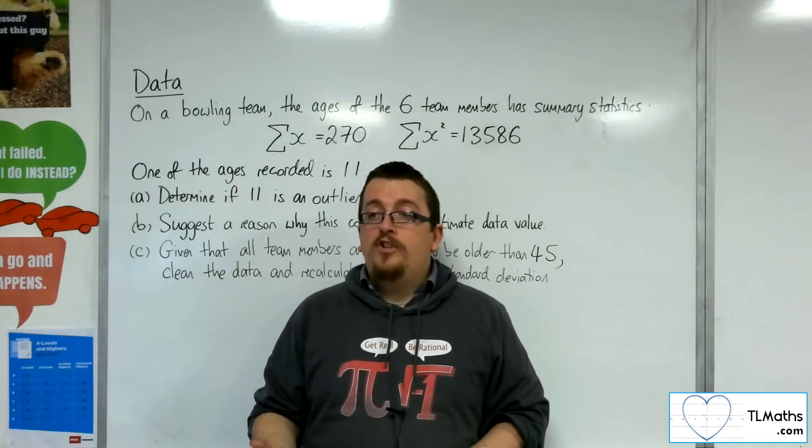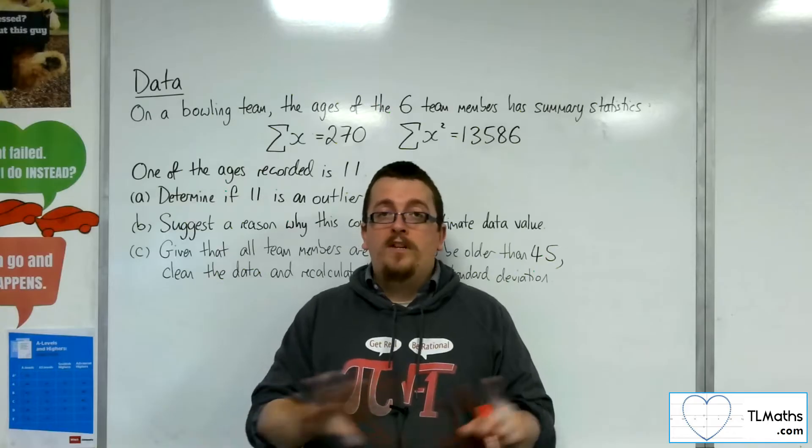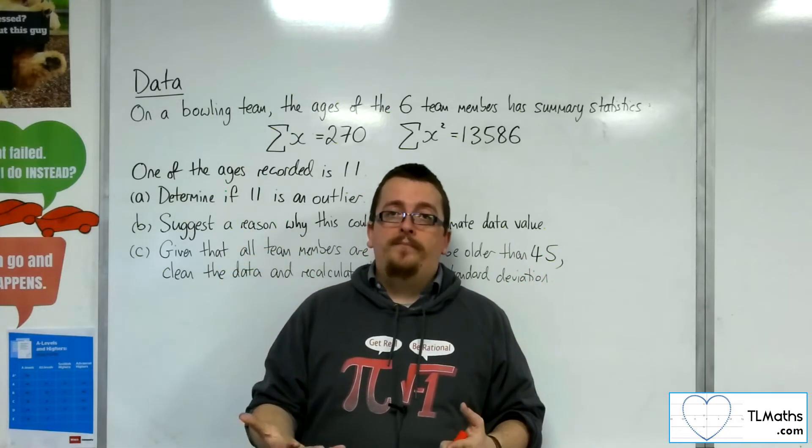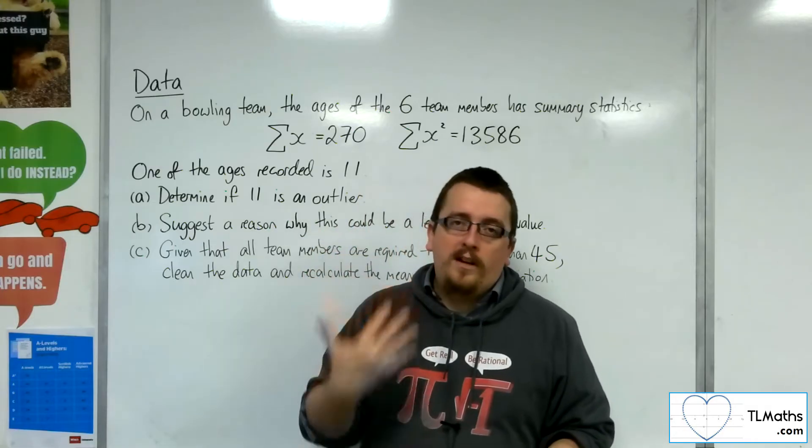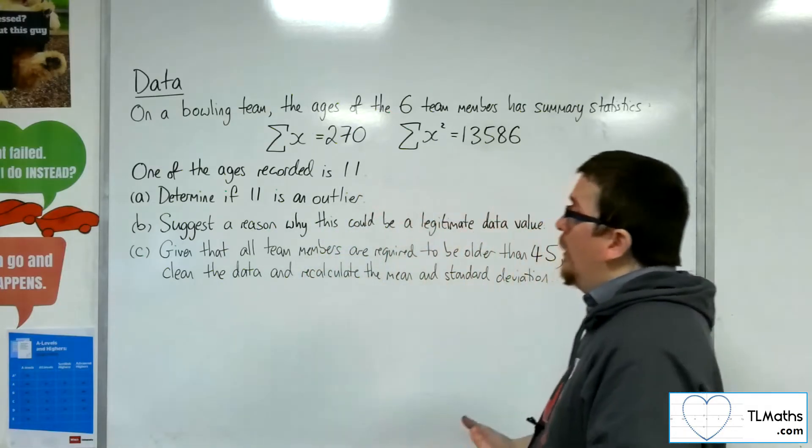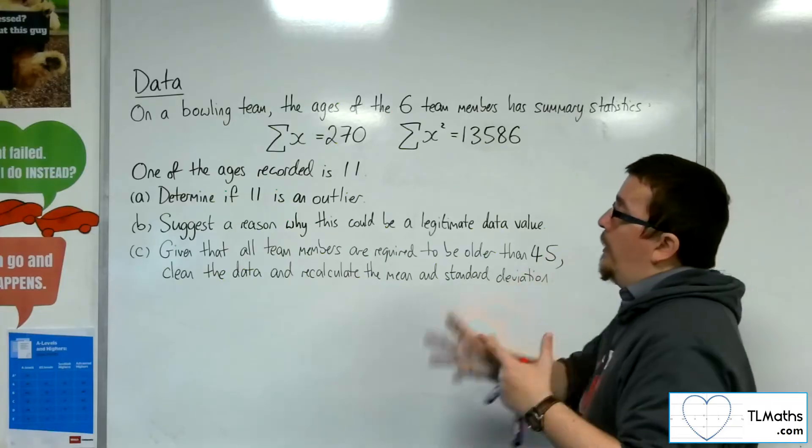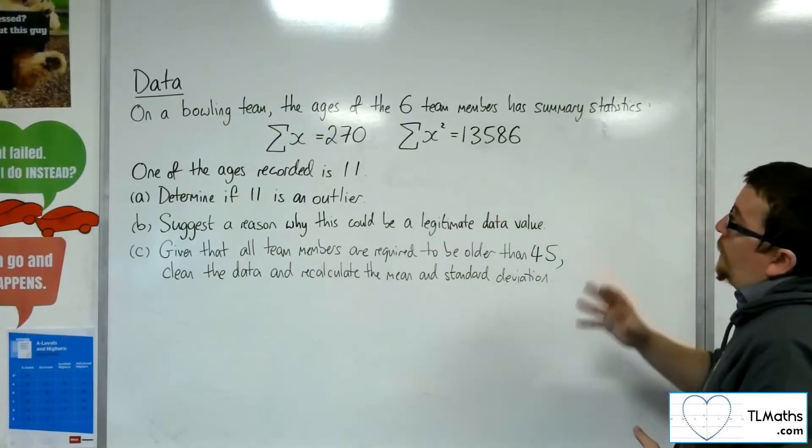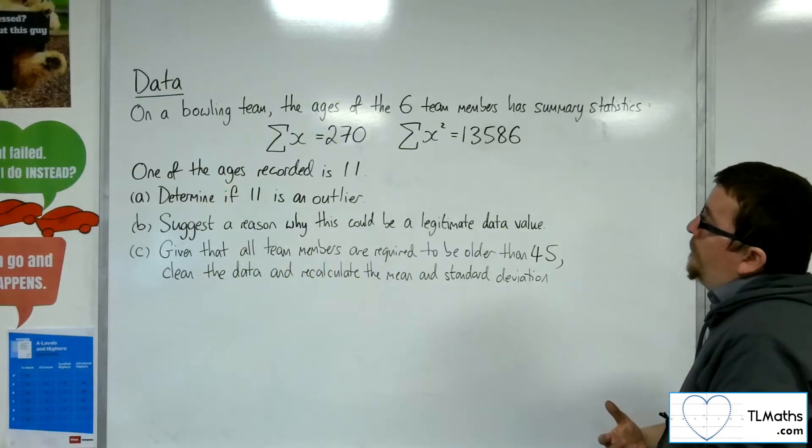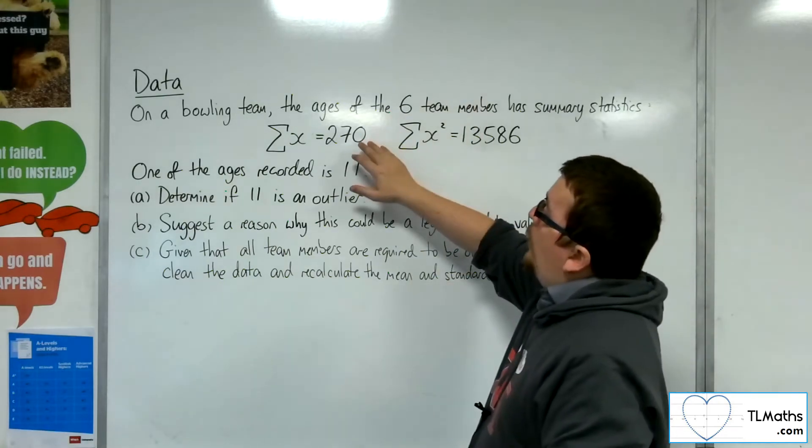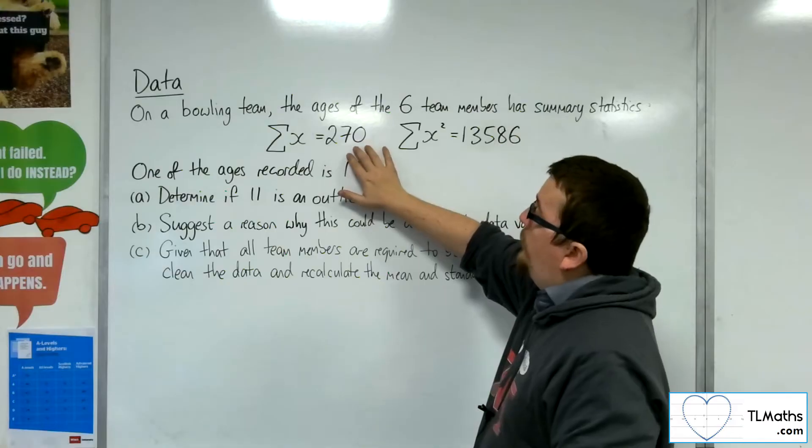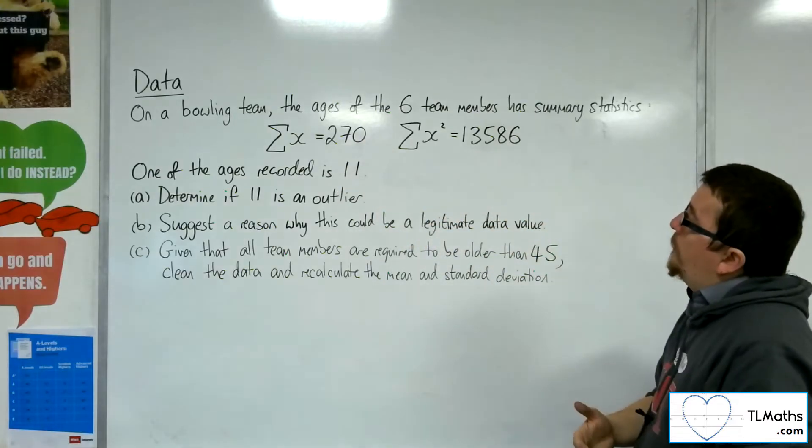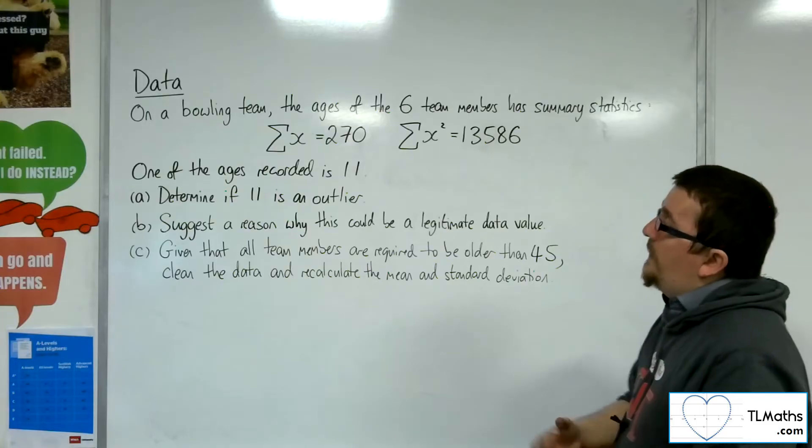The idea is that we would just discard that data point. You ignore it and then you work with the statistics that you have left. So what we're going to do is go through an example here where cleaning data is a part of the problem. We've got a bowling team, there are six team members on the bowling team. And we've got the summary statistics. The sum of x is 270, and the sum of x squared is 13,586. And these are their ages.